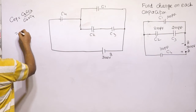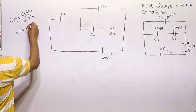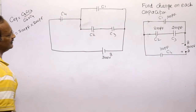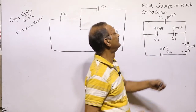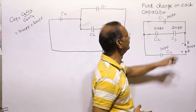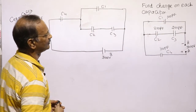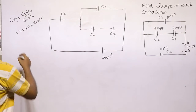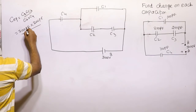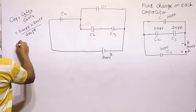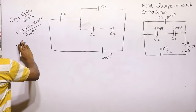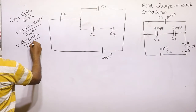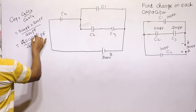C2 is equal to 200 picofarad and C3 is also 200 picofarad. Since both are identical and in series, the equivalent is 200 divided by 2 = 100 pF. That is, 200 × 200 divided by 200 + 200 = 40000 / 400 = 100 picofarad.